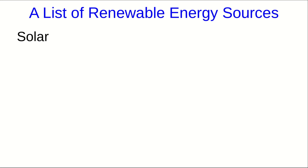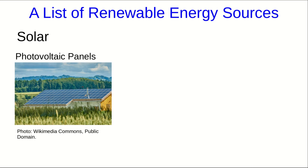Generating electricity with solar, there are two main ways. One is photovoltaic panels. These use material properties of some materials where incoming light liberates electrons and boosts them to a higher voltage, so they can be used to drive a current. A big advantage of photovoltaics is that they can be installed just about anywhere.